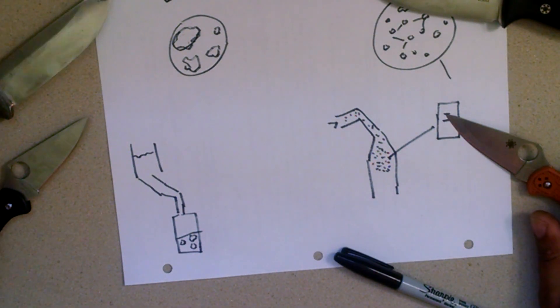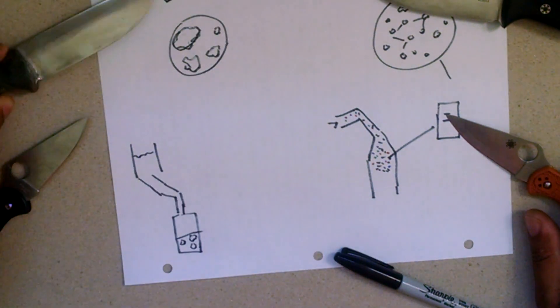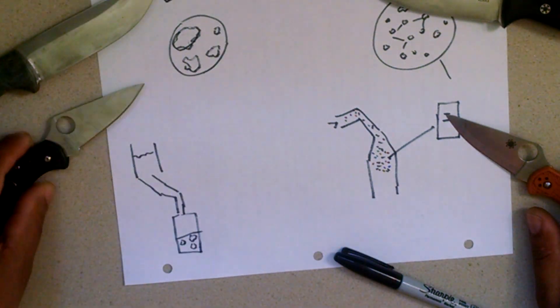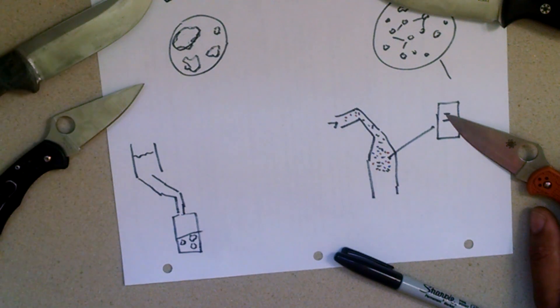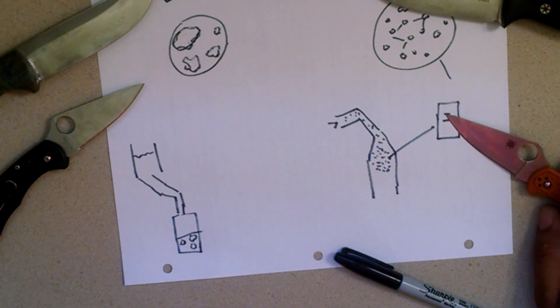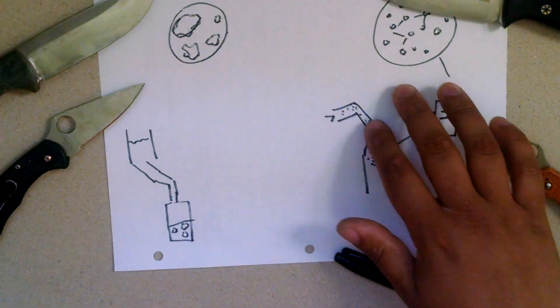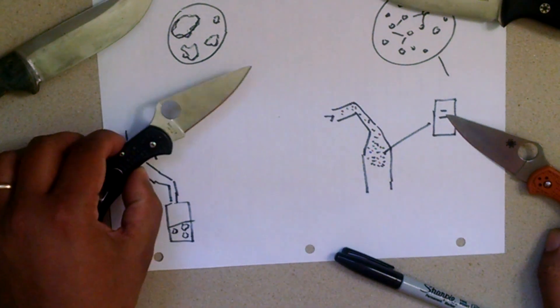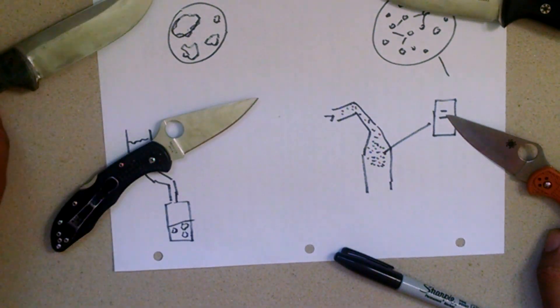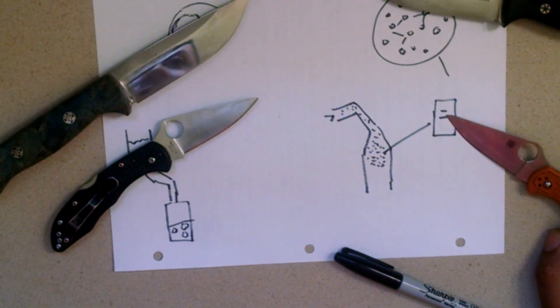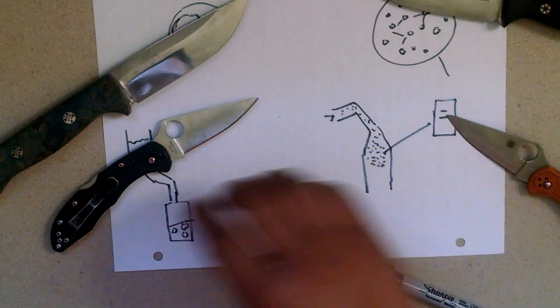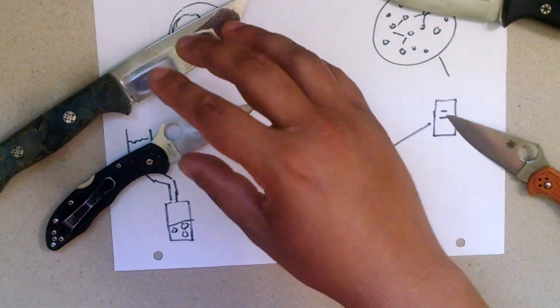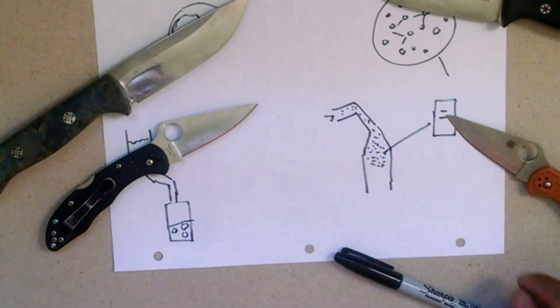So what if we took a steel like A2 or VG10 and we made powdered metallurgy out of these right here? Well, the problem is this is an expensive process and the benefits wouldn't be readily noticed. You wouldn't notice it, because a good heat treatment can move around the furniture on these steels with no problem. With a good heat treat, you don't need a PM process on these guys because there's not a ton of stuff packed into the steel.